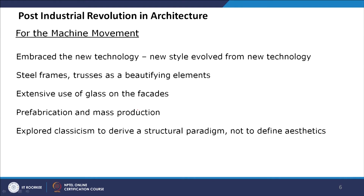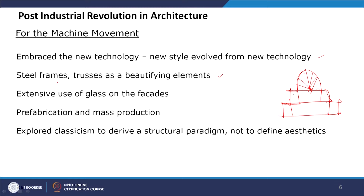What are the features of the for-the-machine movement? They embraced the new technology and a new style evolved from it. In architecture, steel frames and trusses became the beautifying element. As seen in the Crystal Palace, the truss becomes the beautifying element and that is the form of the building, with no other added elements. A new style evolved from the new technology.